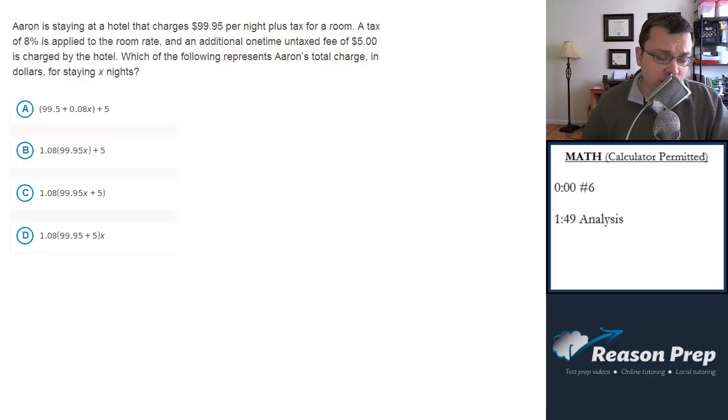Aaron is staying at a hotel that charges $99.95 per night plus tax for a room. A tax of 8% is applied to the room rate and an additional one-time untaxed fee of $5 is charged by the hotel. Which of the following represents Aaron's total charge in dollars for staying X nights?